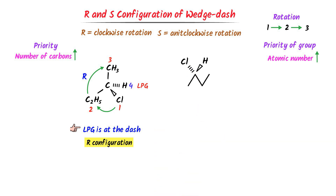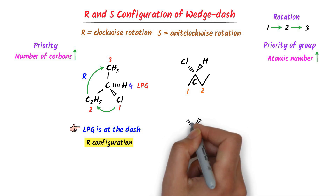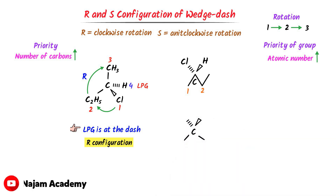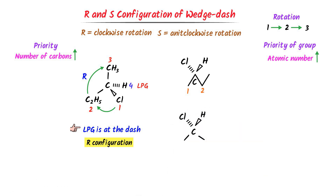Now consider this organic compound — pause the video and try to find its R and S configuration. We know that this is a chiral carbon. At the dash position there is chlorine, at the wedge position there is hydrogen, at the first position there is methyl (CH₃), and at the second position there is ethyl (CH₂CH₃). So this is the structure of this organic compound.